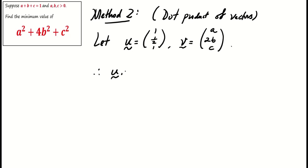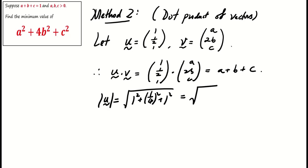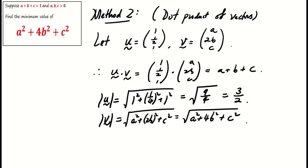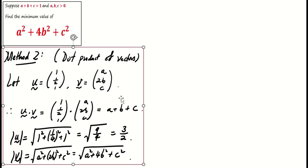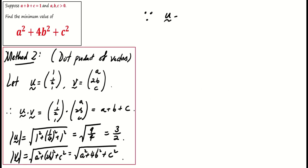The dot product of u and v gives us a plus b plus c, which equals 1 per our condition. Considering the magnitude of u and v, the magnitude of u is 3 over 2, and that of v is square root of a square plus 4b square plus c square. Note that the expression under the square root is the expression we aim to minimize. Since the dot product of u and v is the product of their magnitude and cosine of the angle between them, we derive an inequality from this relationship as follows.